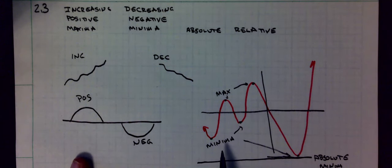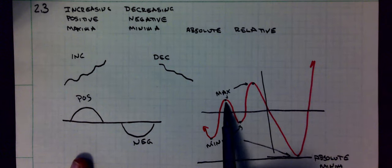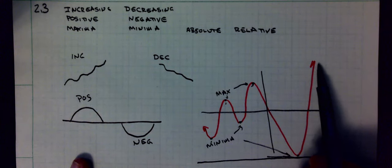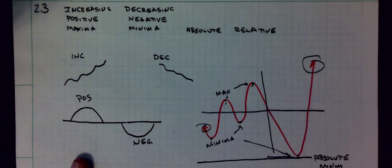And everything else is going to be called a relative. This is a relative minimum, relative minimum, relative max, relative max. The reason why there's no absolute max is because my graph goes to infinity.